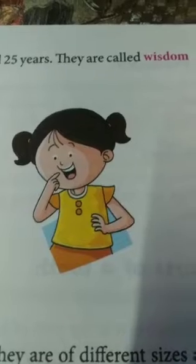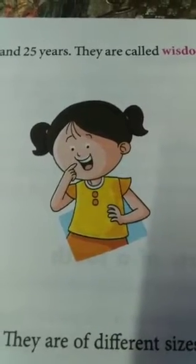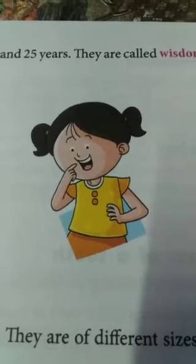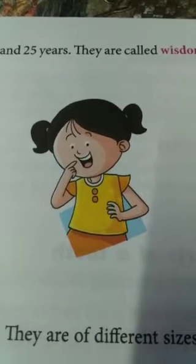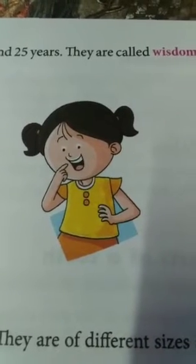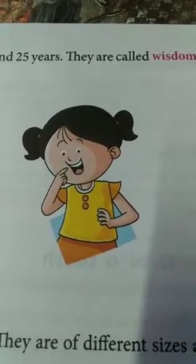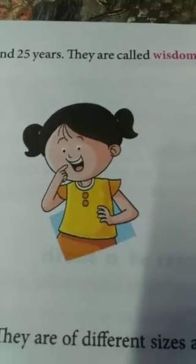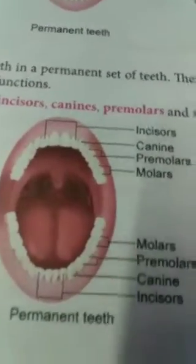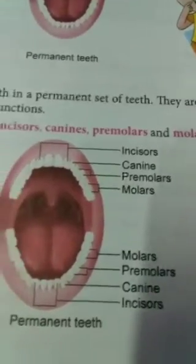Now let's come to different types of teeth. There are basically 4 types of permanent teeth: incisors, canines, premolars, and molars. Here you can see in the drawing the different positions of the different types of teeth.